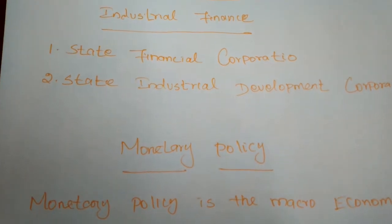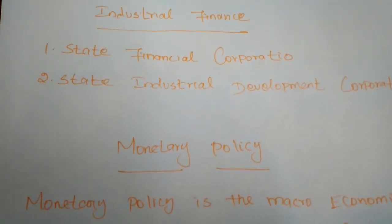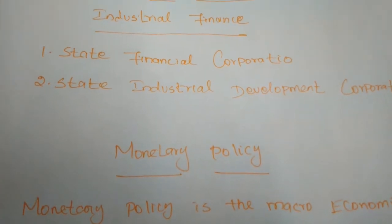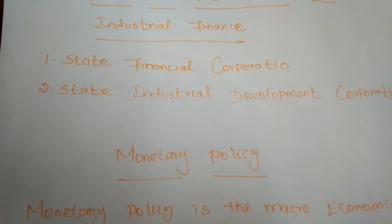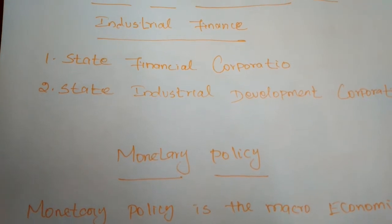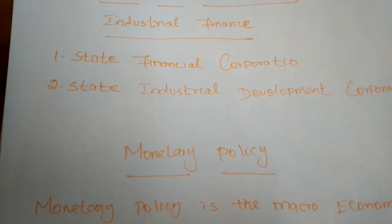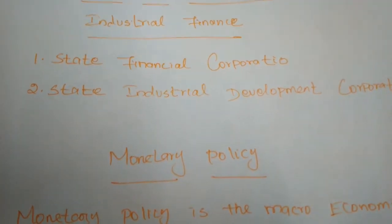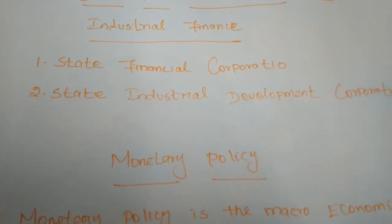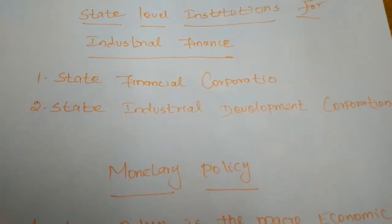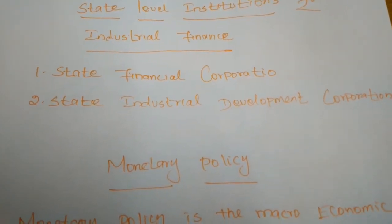The state financial corporations depend upon the IDBI for refinance in respect of the term loans granted by them. Whenever state finance corporations want to provide financial facilities to small and medium scale enterprises, they also depend upon the Industrial Development Bank of India. Apart from this, the state financial corporations can also make temporary borrowings from the RBI, borrowings from IDBI, and by the sale of bonds, to provide financial assistance to entrepreneurs of small and medium scale industries.